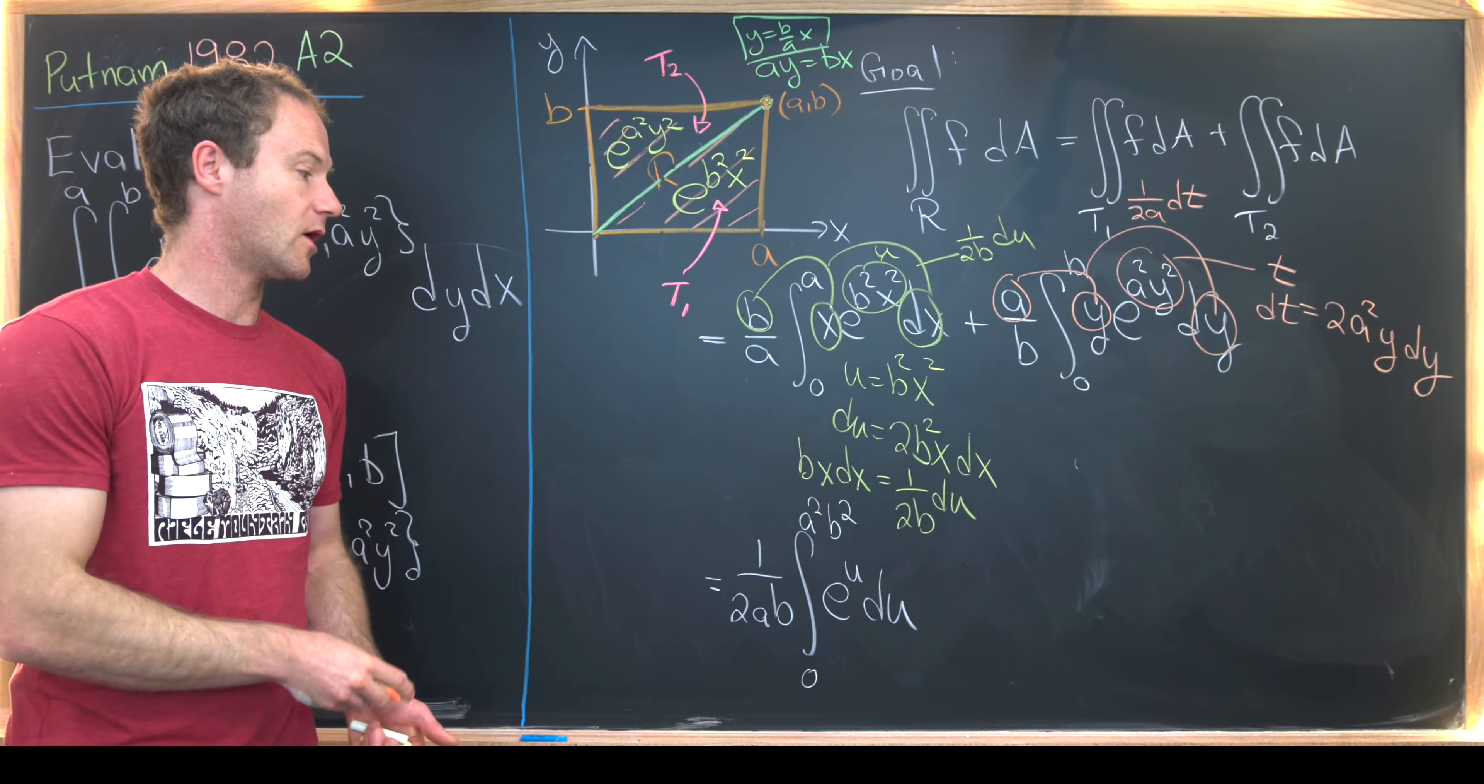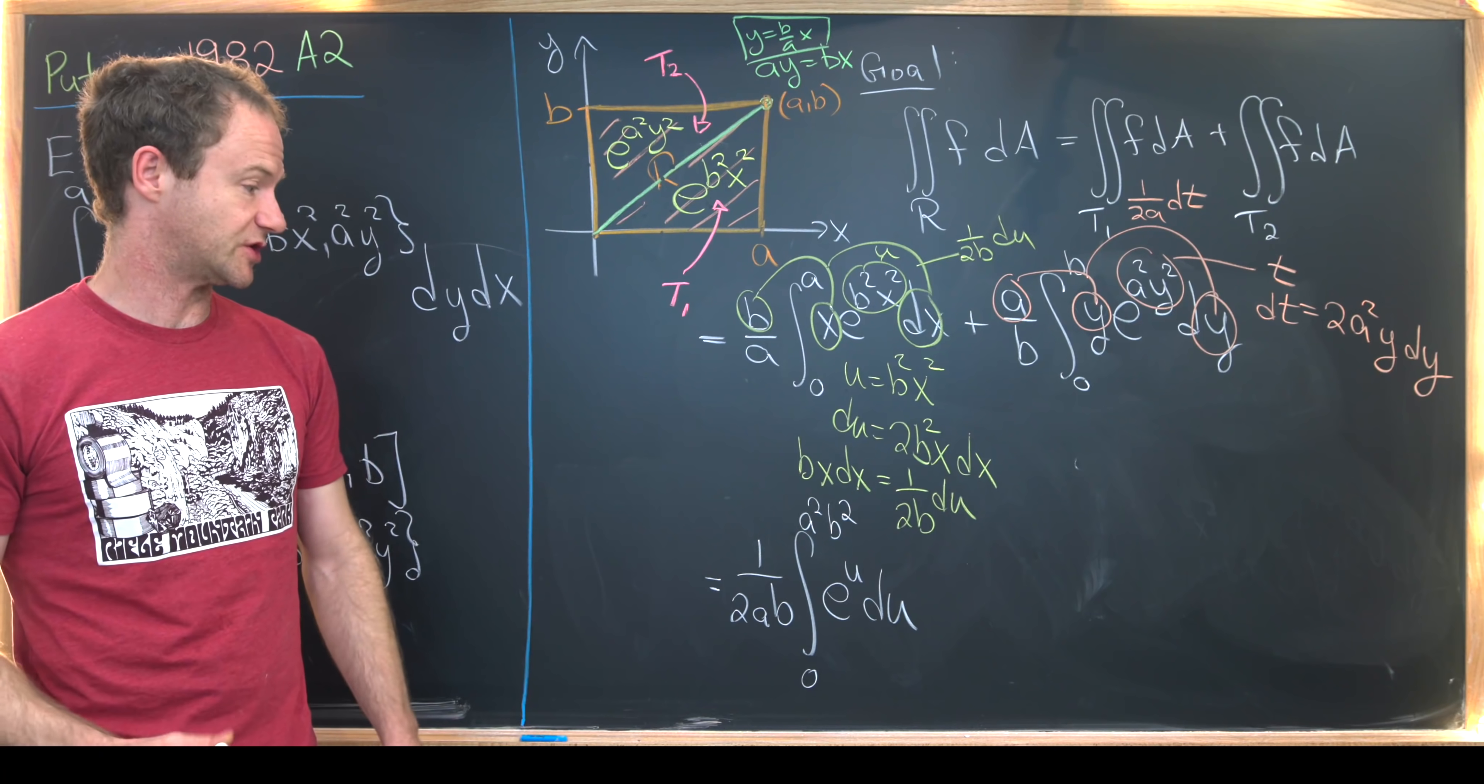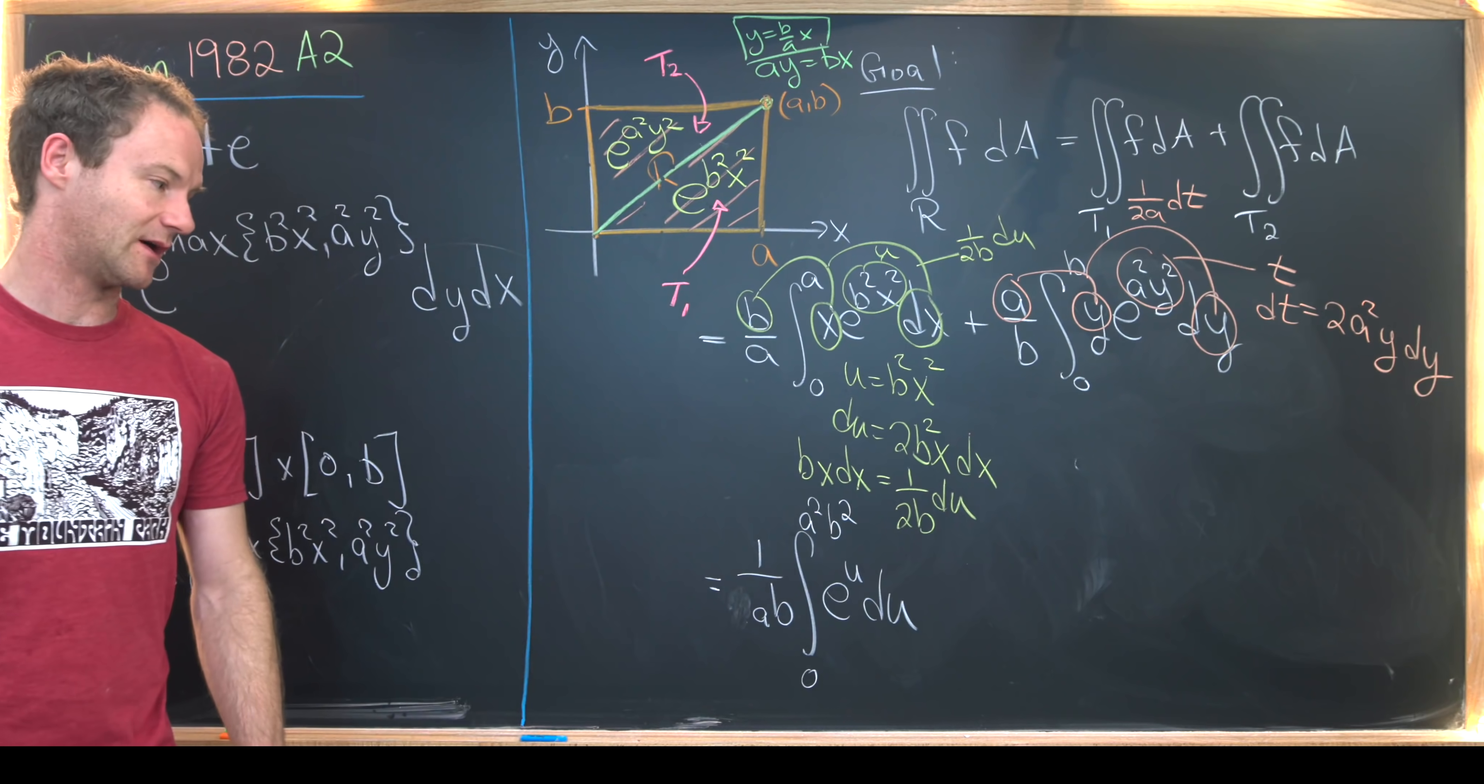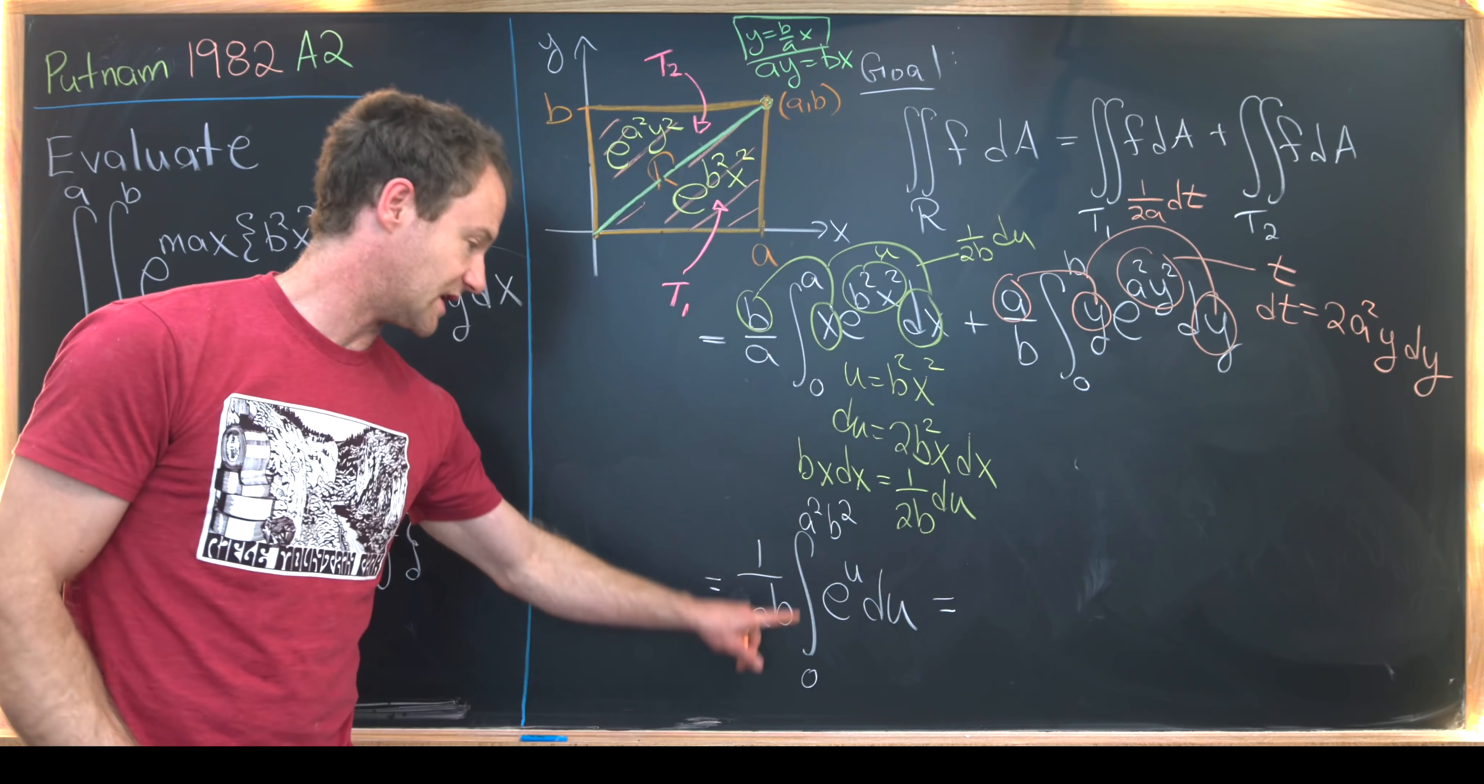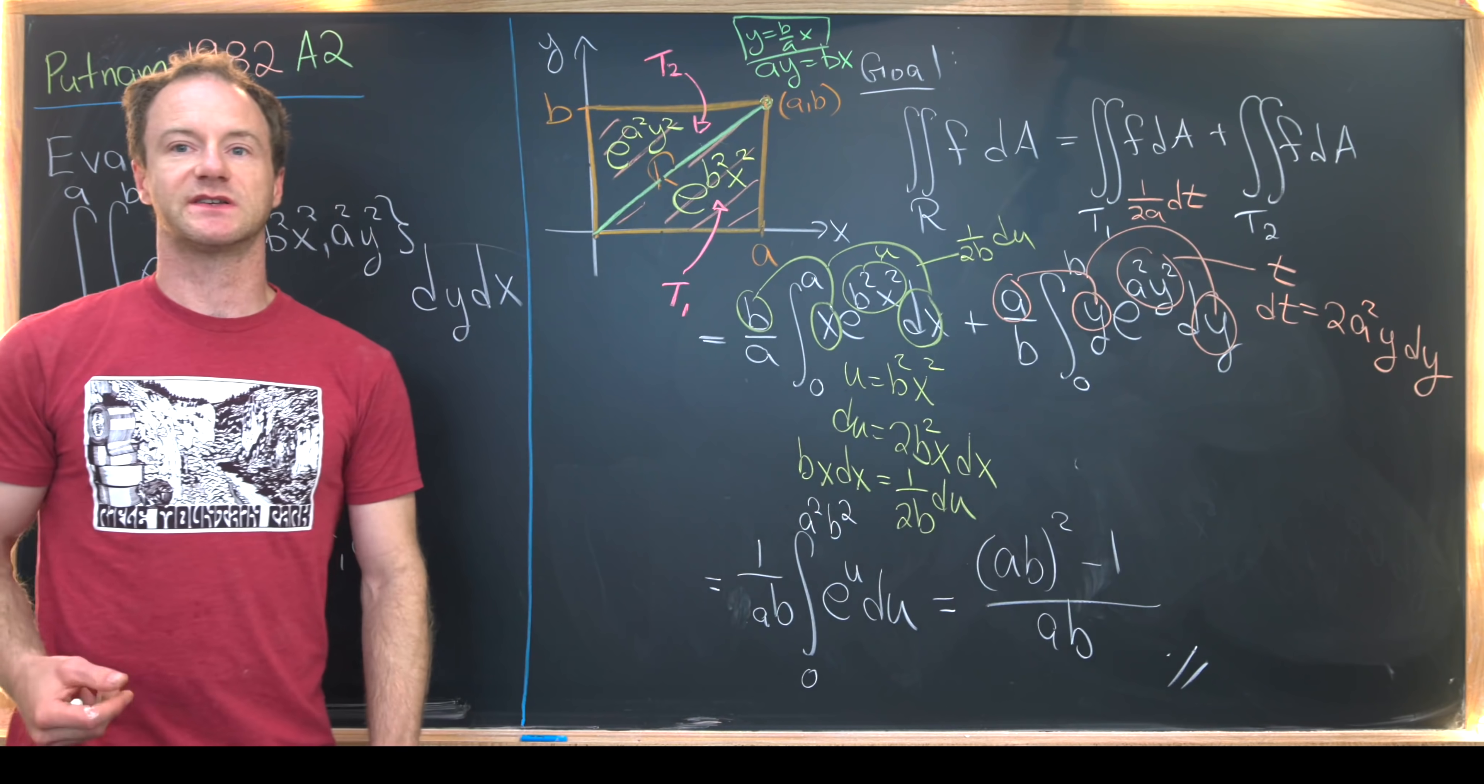But then when all the dust settles, you'll see that you get exactly this integral again, but just with t's in there. So we might as well make the dummy substitution of just t for u. And that means we're adding this integral to itself, which means we can get rid of this extra two in the denominator. But now it's pretty easy to finish it off by taking this antiderivative and plugging in the end points. That'll leave us with a b quantity squared minus one over a b. And that's a good place to stop.